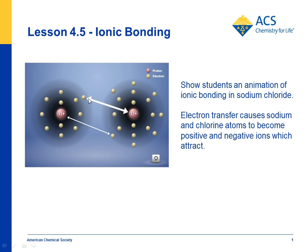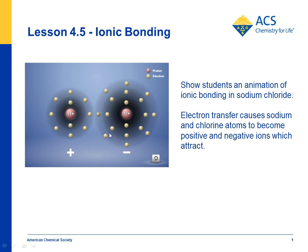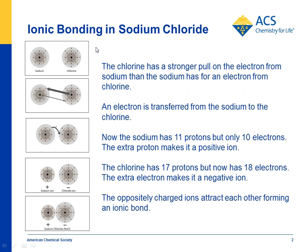The animation shows that chlorine has a stronger pull on electrons. Chlorine became a negative ion, sodium became a positive ion, and they came together and formed an ionic bond.